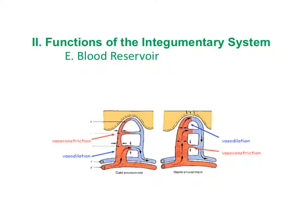The fifth function of the integumentary system is to act as a blood reservoir. Up to five percent of the body's blood can be held in the dermal layer of the skin, which can then move back into circulation when there is a change in metabolic need, such as during exercise or after a large meal, to supply muscles or the digestive system with increased blood flow.